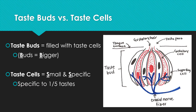When I say specific, I mean that they're highly sensitive to only one of the five primary tastes. Taste buds, in contrast, are sensitive to all five flavors or tastes, and that is because they include all five types of taste cells.